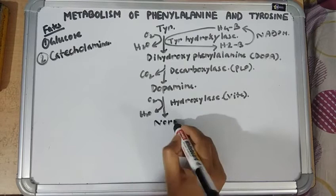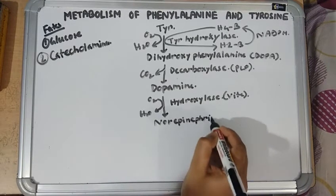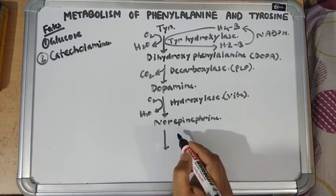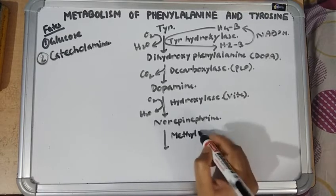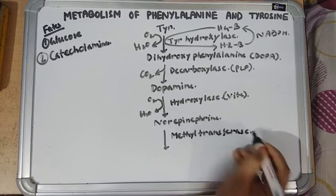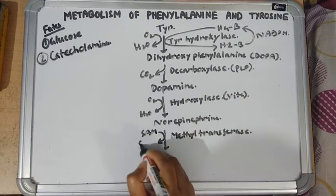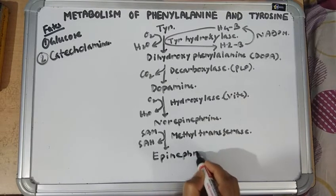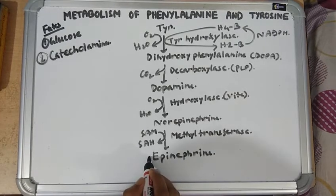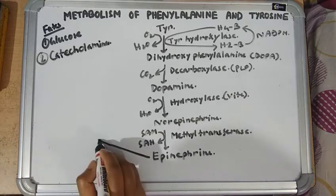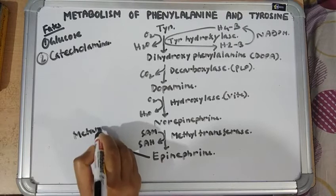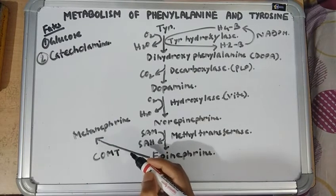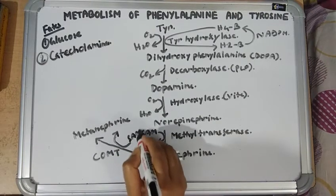Norepinephrine is the second catecholamine. Norepinephrine is then acted upon by the enzyme phenylethanolamine N-methyltransferase (PNMT), which is a methyltransferase. A methyl group is donated by S-adenosyl methionine to form epinephrine, which is the third catecholamine. Epinephrine is then converted into metanephrine by the enzyme catechol-O-methyltransferase (COMT), and again S-adenosyl methionine donates the methyl group.